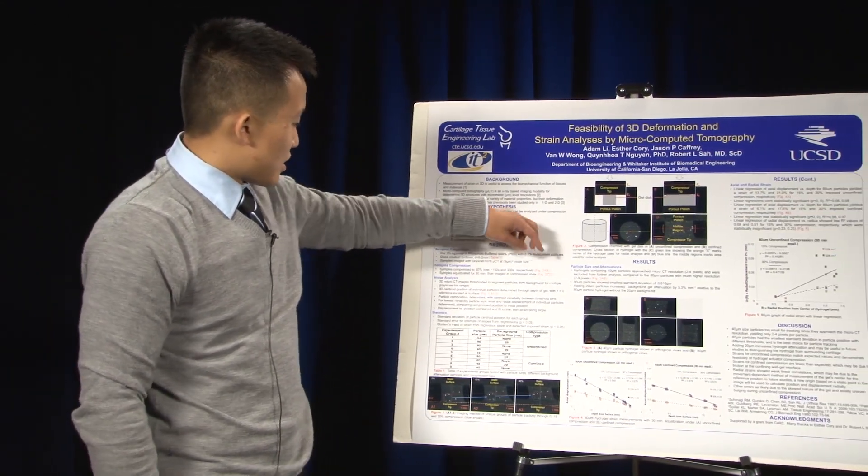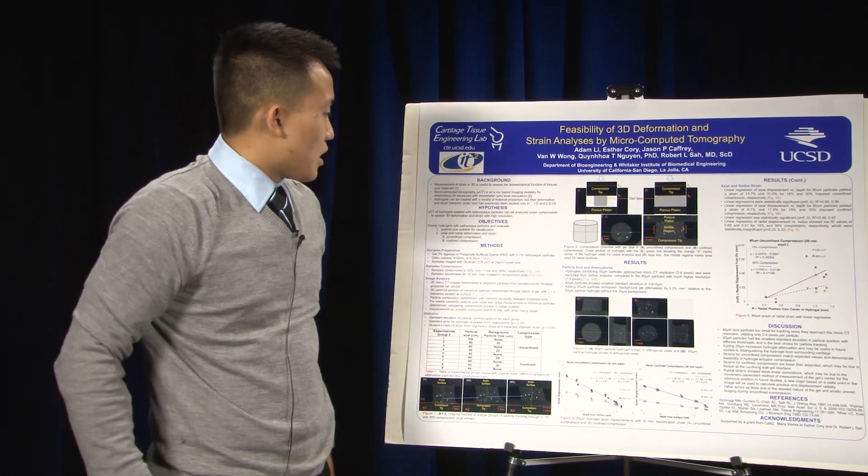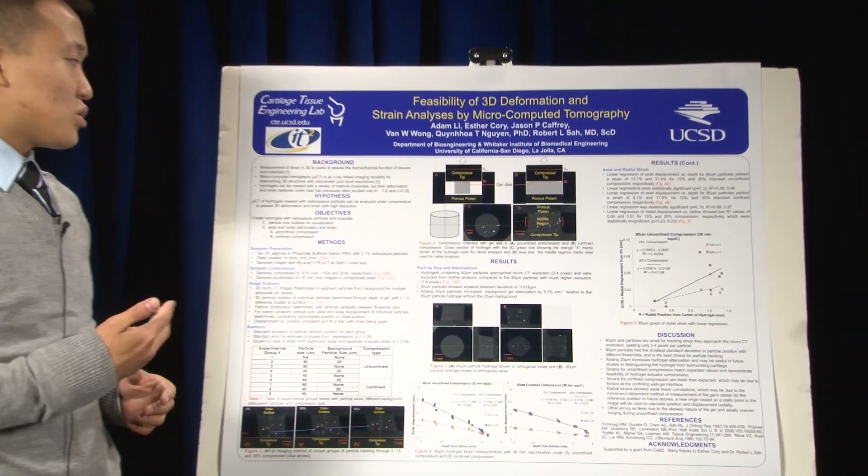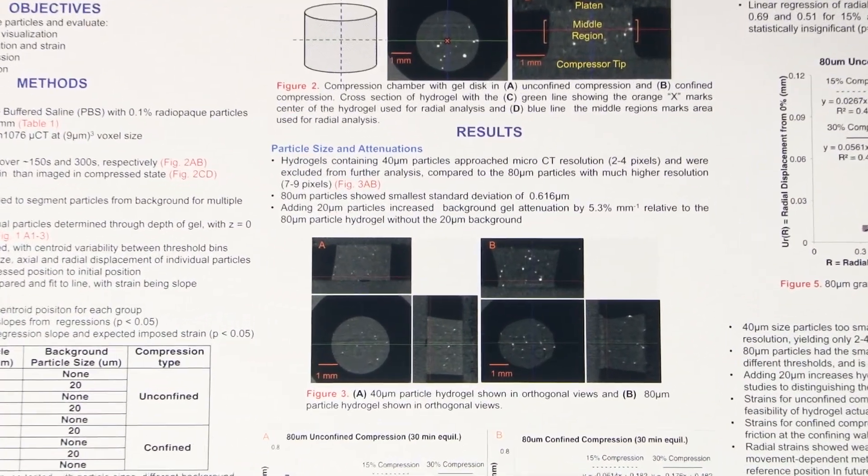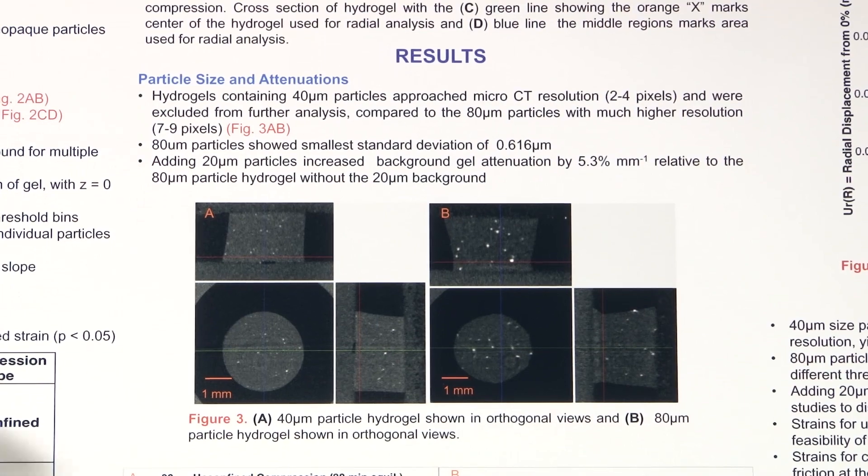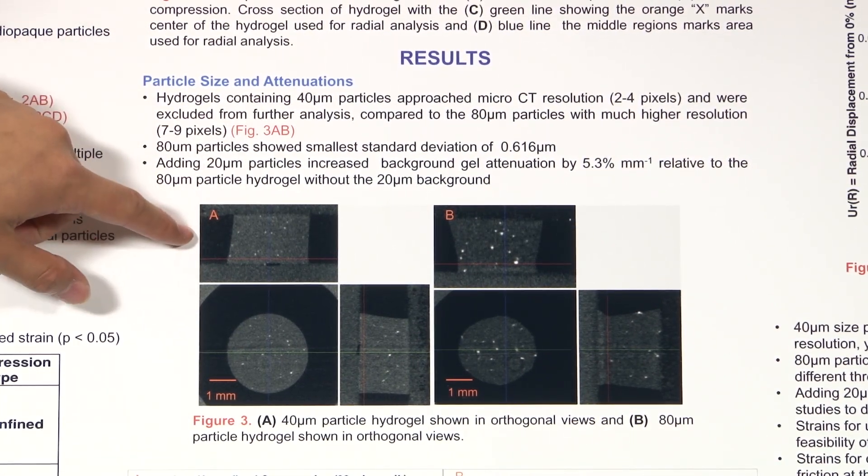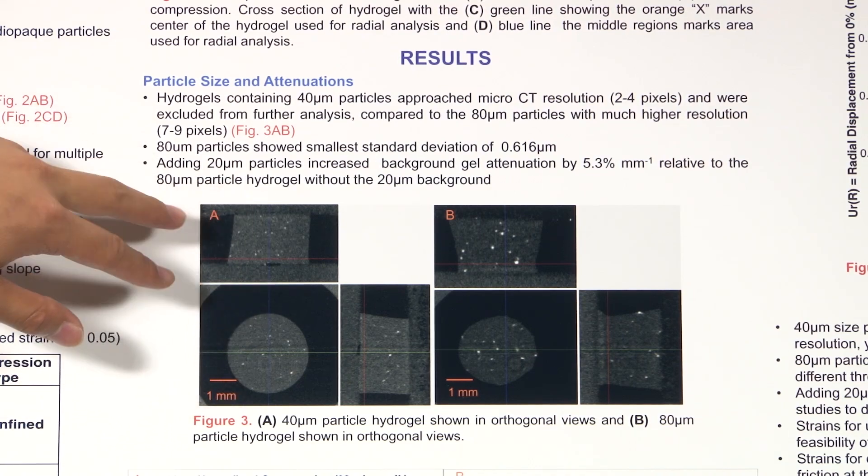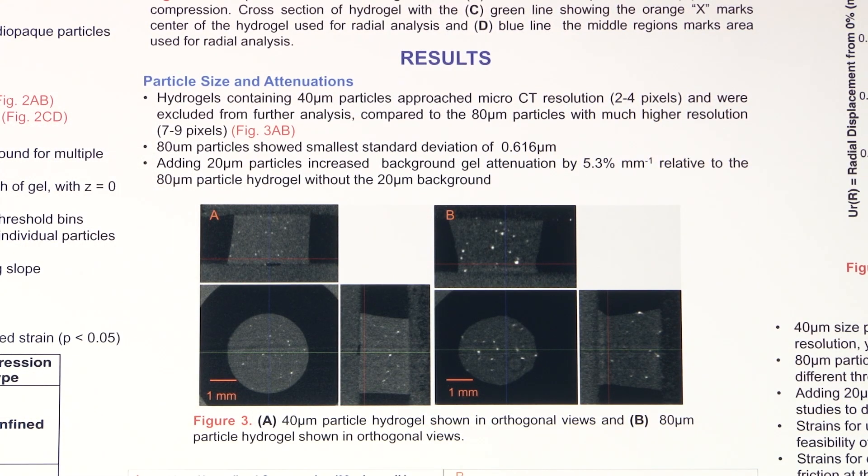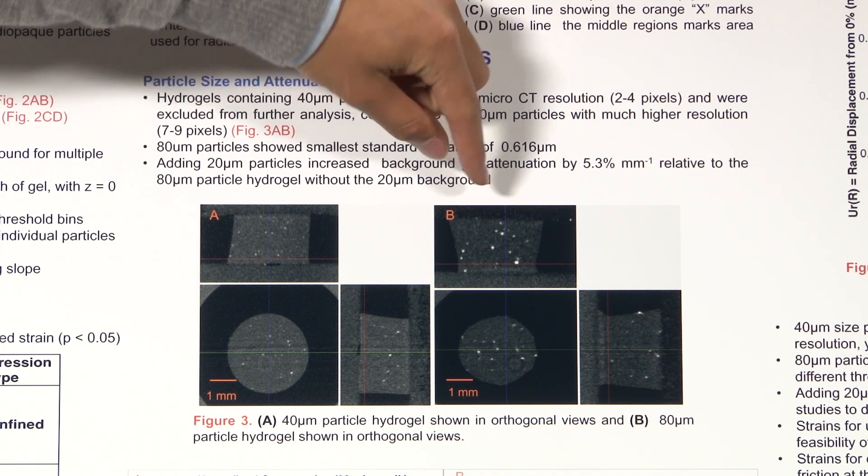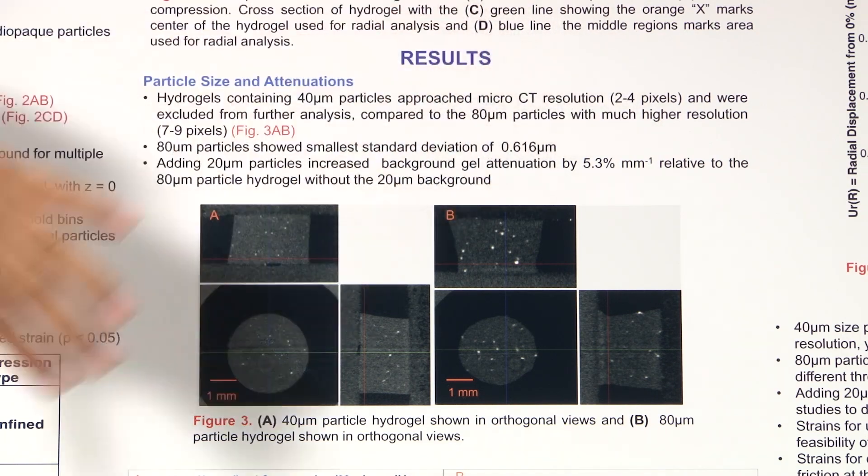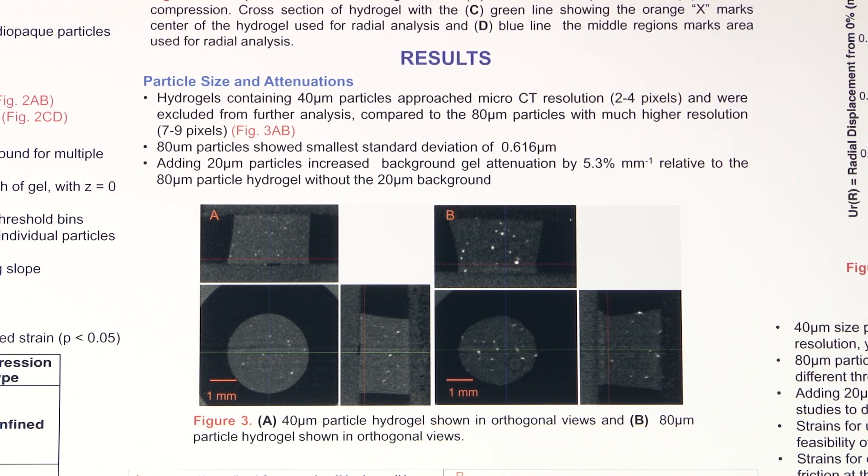In our results section, you can see that we determined that hydrogels containing 40 micrometer particles approach micro-CT resolution of only 2 to 4 pixels. As you can see in Figure 3, this is a 40 micrometer hydrogel with 2D sections. It basically shows a 3D kind of view of the hydrogel. And then, here's the 80 micrometer hydrogel. As you can see, it's distinctly different in the appearance of the particles. Whereas the 40 micrometer particles, you can barely see it. The 80 micrometer particles had a much higher resolution of 7-9 pixels.